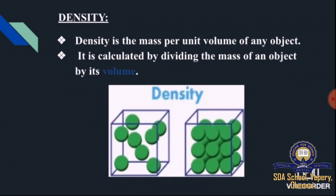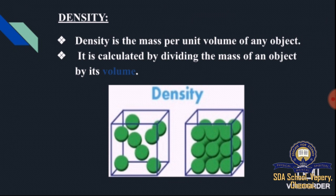Density is the mass per unit volume of any object. We can take any object and fill it with matter up to a certain limit — if more is added, it will come out. So for any object, there is a limited amount of space to fill. Density is calculated by dividing the mass of an object by its volume.